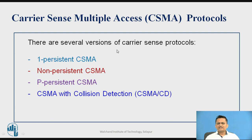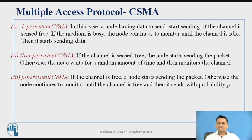There are several types of CSMA protocol: 1-persistent CSMA, non-persistent CSMA, and P-persistent CSMA. In 1-persistent CSMA, you sense the carrier. If nobody is transmitting, you transmit immediately. If somebody is transmitting on the shared channel, you continuously monitor the channel until it becomes free, and then transmit again. This approach is called 1-persistent CSMA.